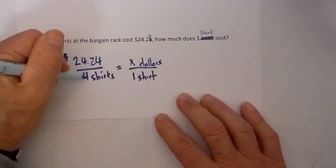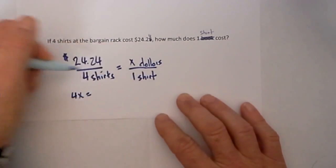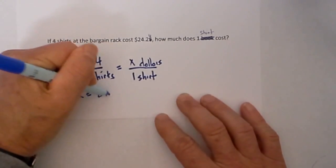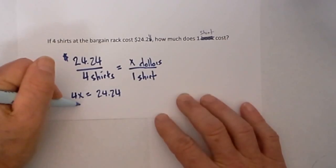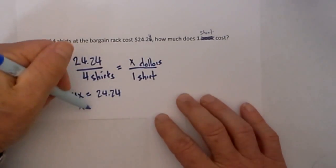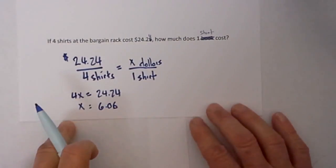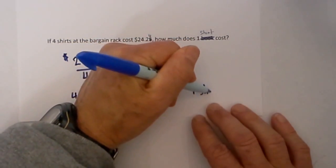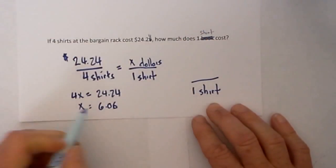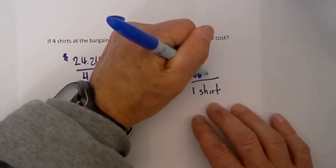We cross multiply. So 4x is equal to $24.24. So x is equal to 24.24 divided by 4, and that equals 6.06. So we can rewrite that as 1 shirt equals $6.06.